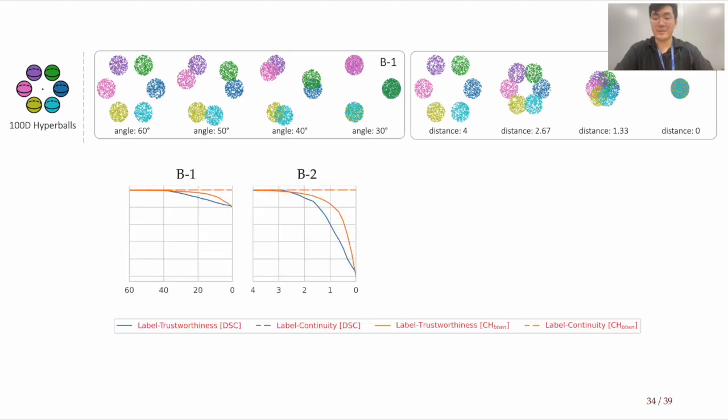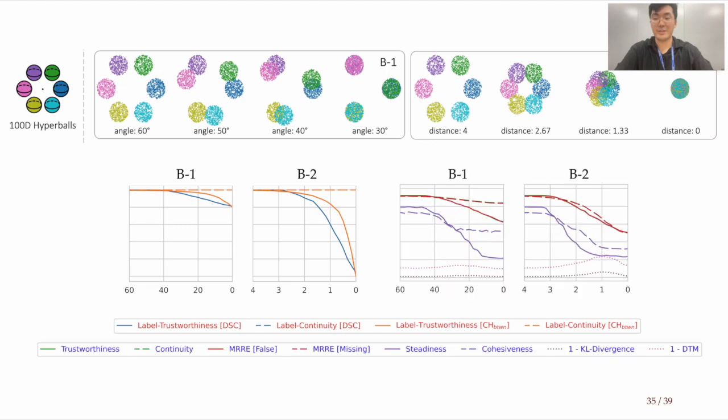As a result, our metrics, label trustworthiness and continuity, clearly reflect the increased distortions in the latter scenario. Meanwhile, previous metrics failed to do so, underscoring our metrics' accuracy.